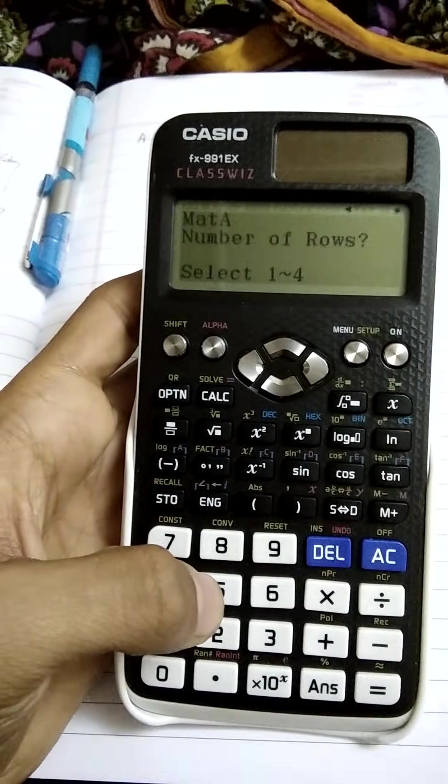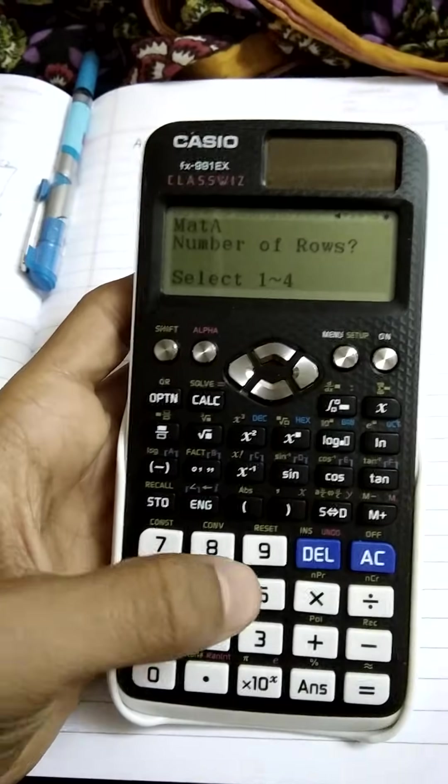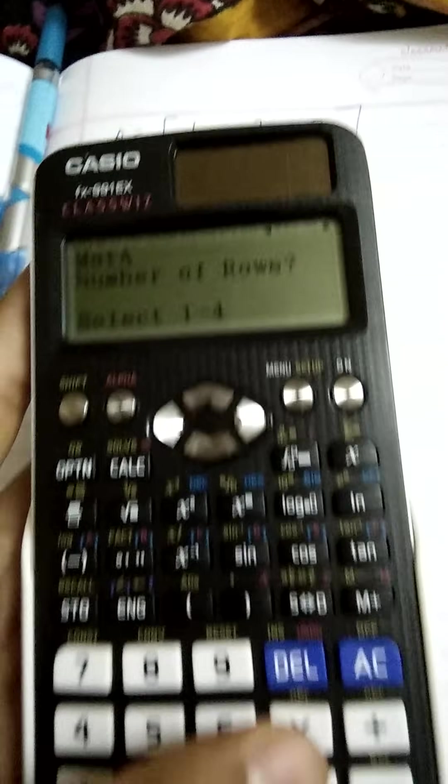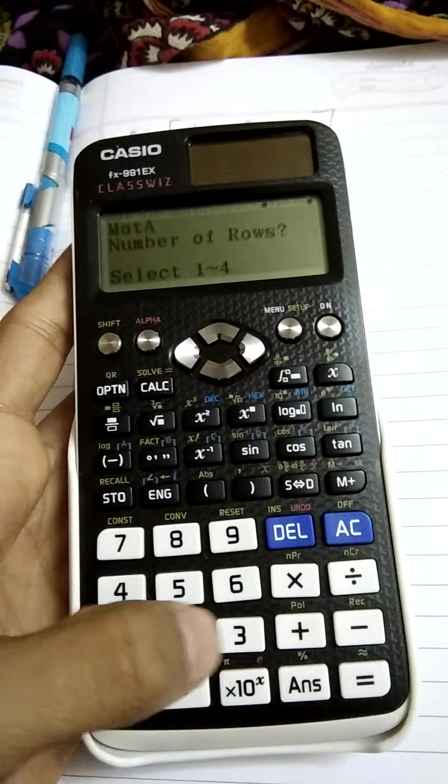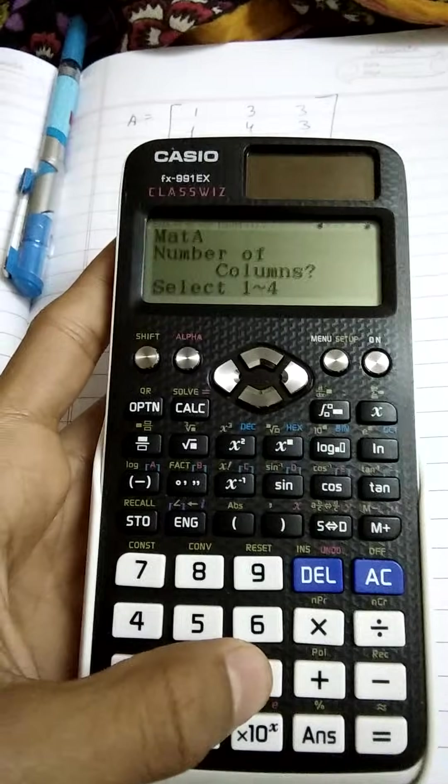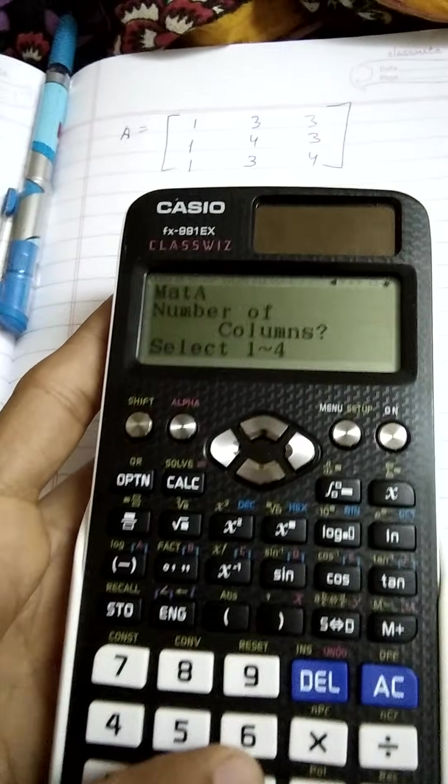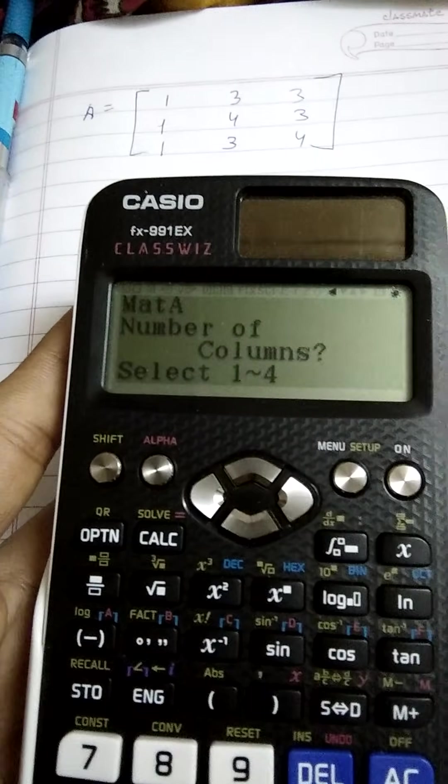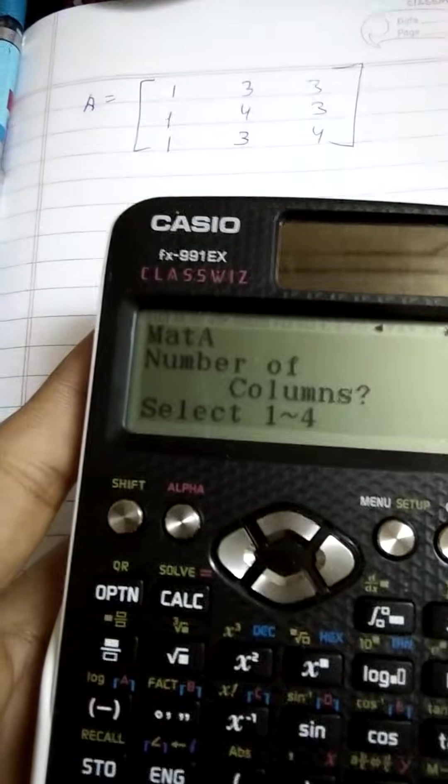It's asking for the number of rows. In the question, the number of rows is 3, so we will press 3. Now it's asking for the number of columns. Number of columns is also 3.